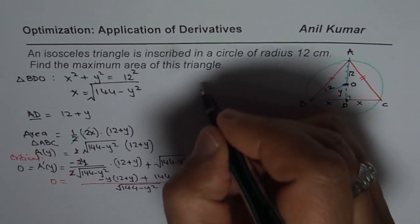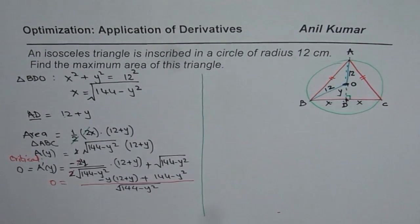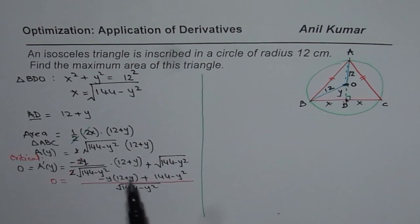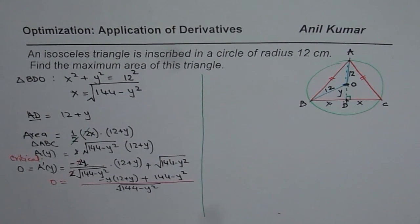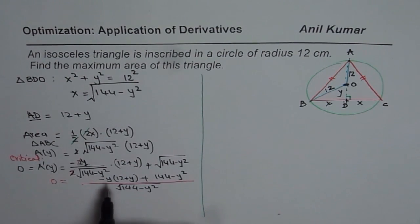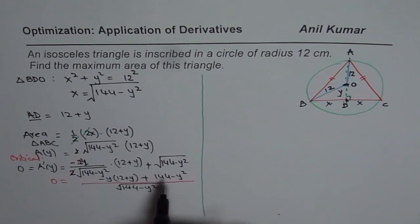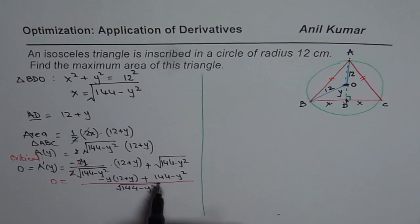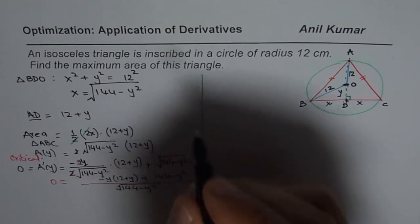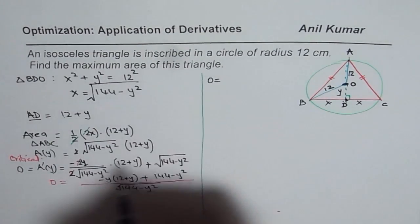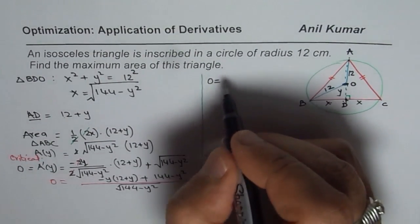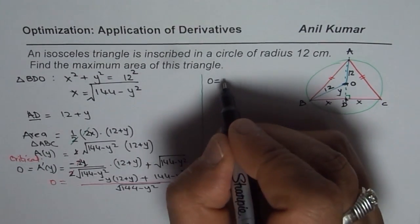The expression is zero when the numerator is zero. We have 144 minus Y² minus Y(12 plus Y) in the numerator. Now 144 minus Y² can be written as (12 plus Y)(12 minus Y), so 12 plus Y is a common factor. We want to write this in factored form — this is a critical step to find the critical number.